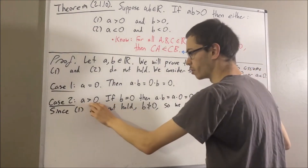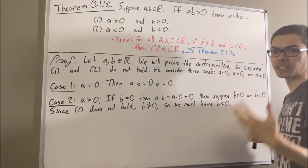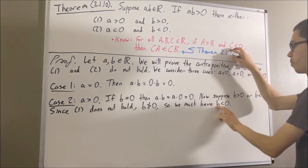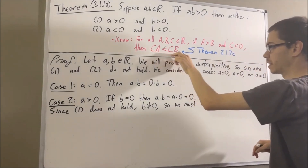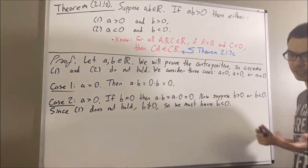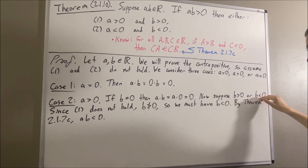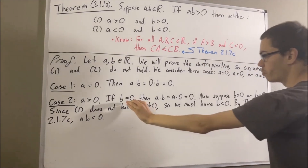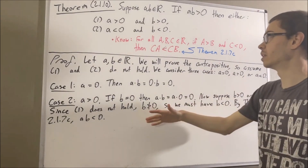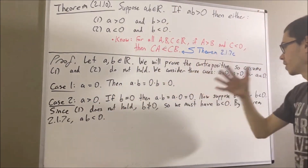So we know that A is greater than zero and B is less than zero. Applying theorem 2.1.7c, we can obtain that AB is less than zero. The reason is: if we call A capital A, zero capital B, and B capital C, it follows that CA is less than CB — so in our case, B times A is less than B times zero, meaning AB is less than zero. So we have shown that in the case where B is greater than zero or B is less than zero, AB must be less than zero. Since B equals zero or B is nonzero covers every possibility, we must have that AB is not greater than zero. This completes the case where A is greater than zero.